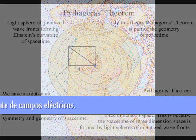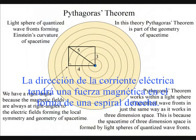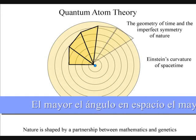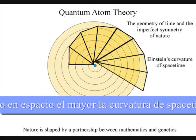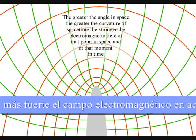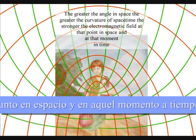The magnetic fields are always at right angles to the electric fields, forming the local spacetime symmetry and geometry that will spiral out, creating the visual and mathematical patterns of our universe. The greater the angle in space, the greater the curvature of spacetime, the stronger the electromagnetic field at that point in space and at that moment in time.